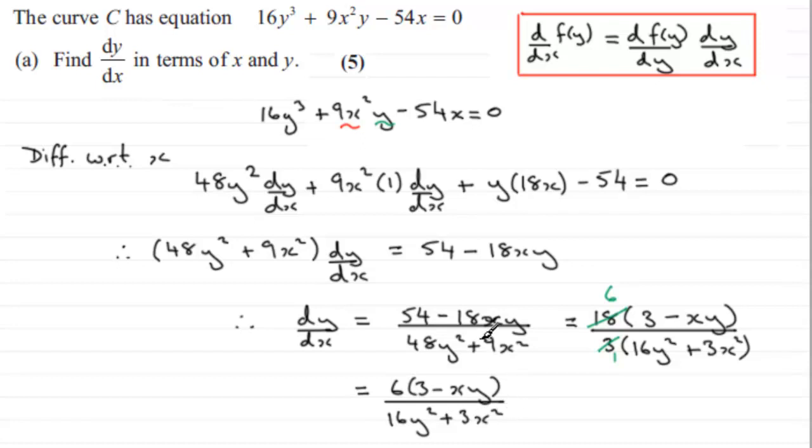You might not even want to factorize the top, just divide every term through by 3, and what you'd end up with is 18 here minus 6xy, all over 16y² + 3x².